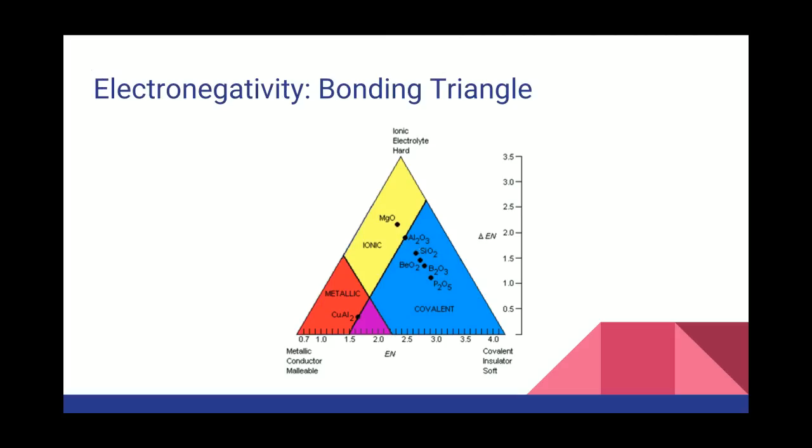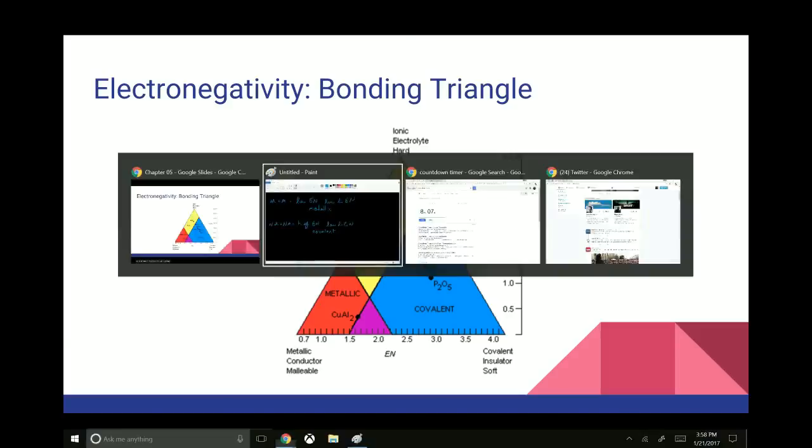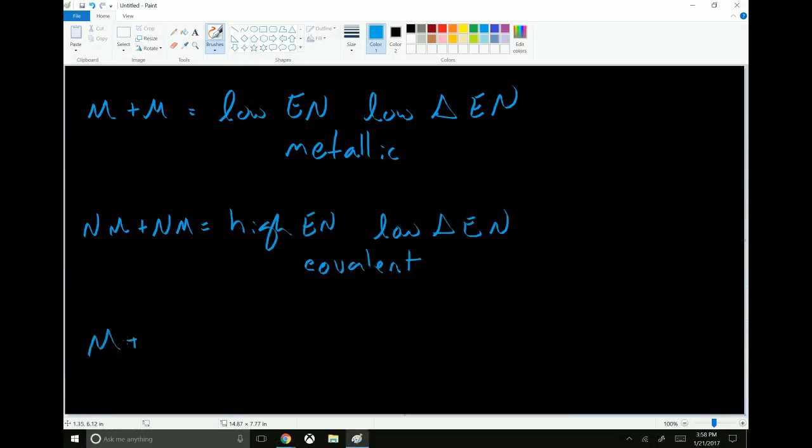And then finally, up here at the top, you have the average electronegativity, I suppose you'd say. But a very high electronegativity difference. In other words, we're looking at a metal plus a non-metal. Meaning we're talking about a high electronegativity difference. That's what really matters there. And it is an ionic compound.